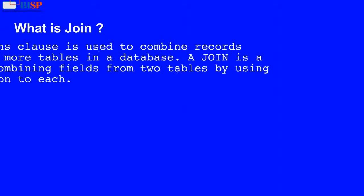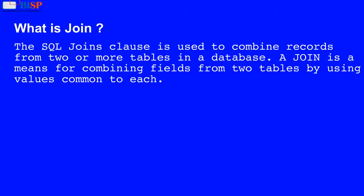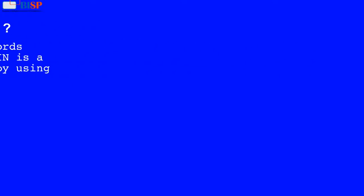What is join? The SQL joins clause is used to combine records from two or more tables in a database. A join is a means for combining fields from two tables by using values common to each.